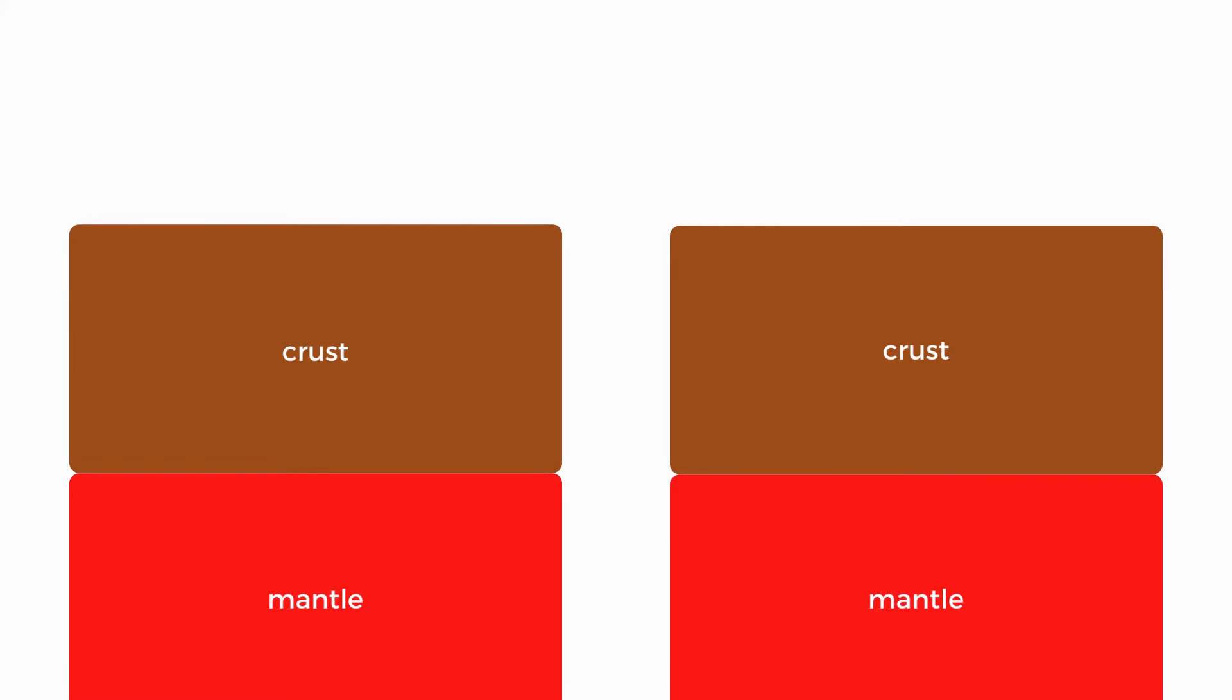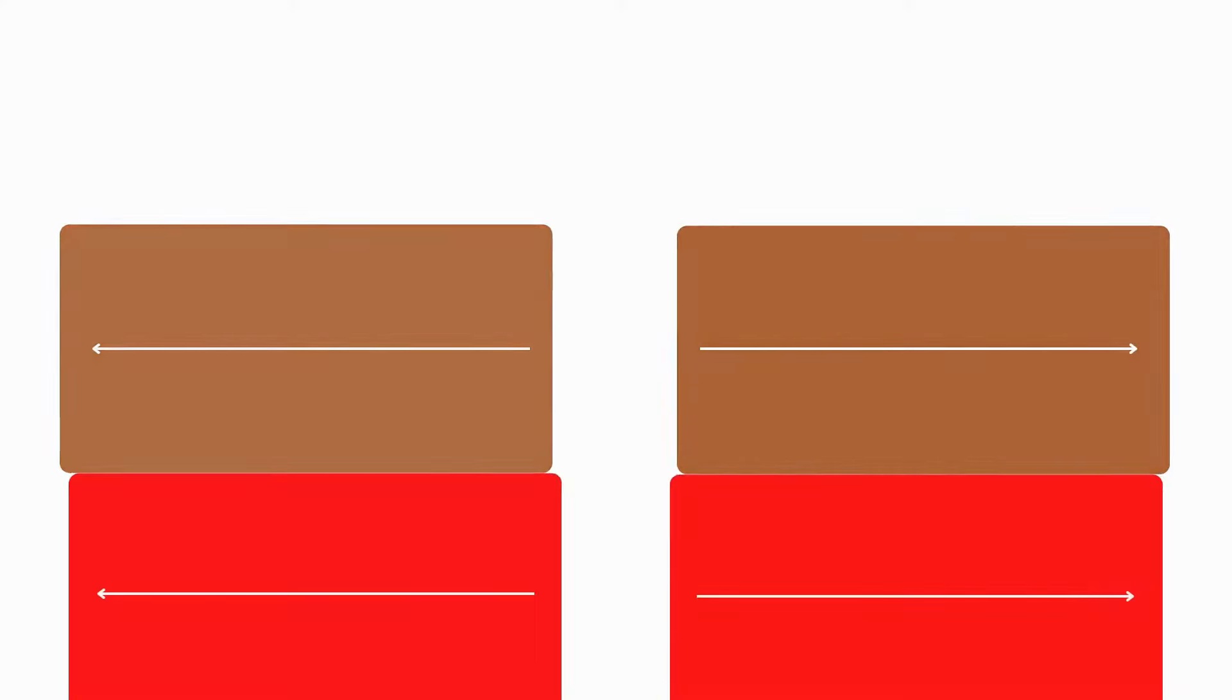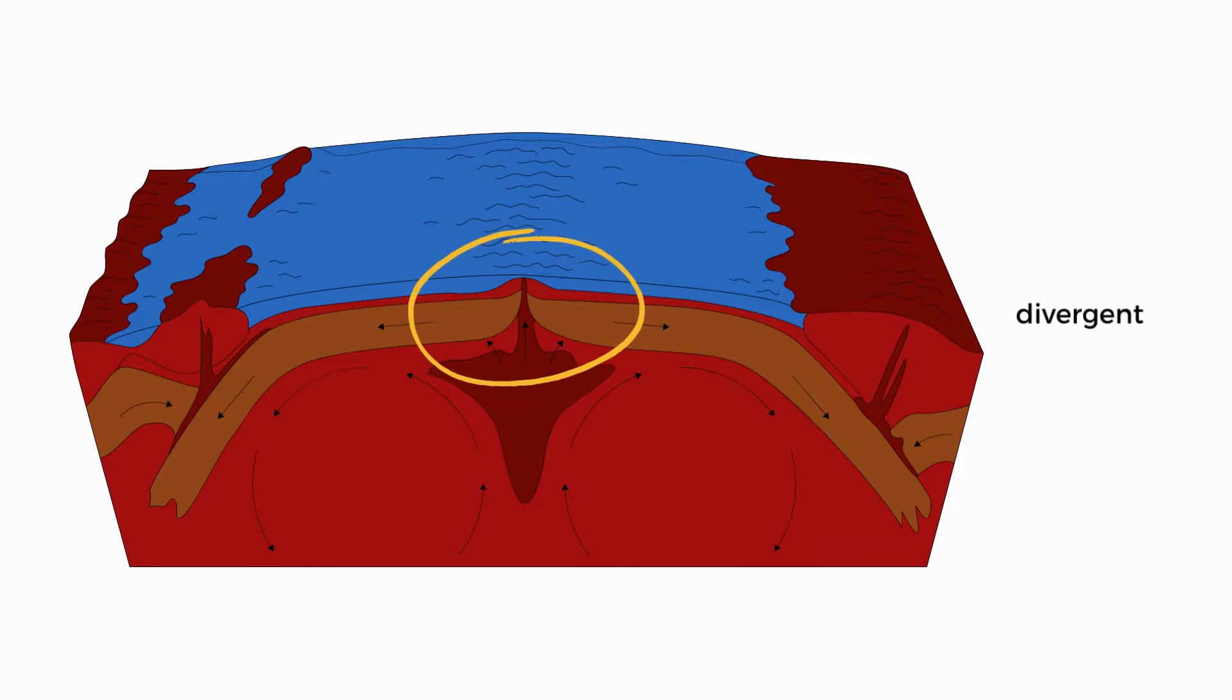Since the crust sits on top of the mantle, it will replicate this movement. The two plates will move away from each other, creating what we call a divergent plate boundary that is constructive.